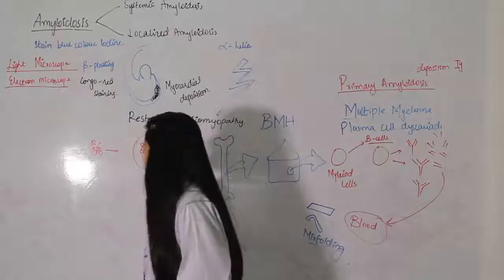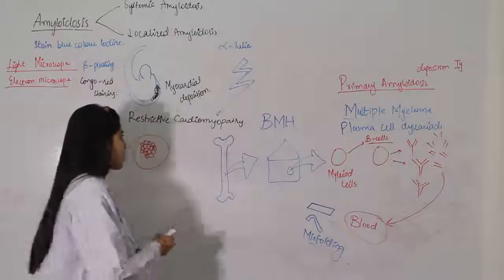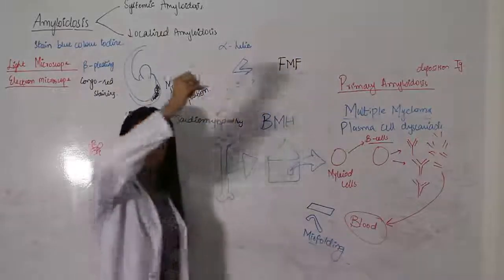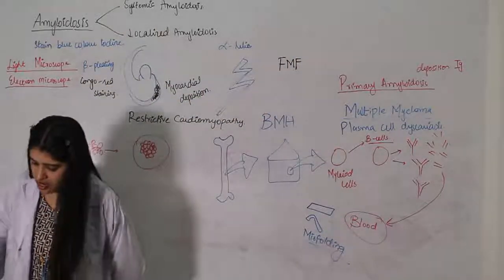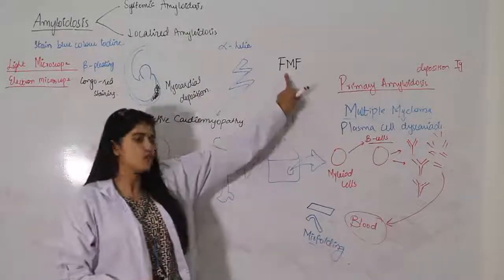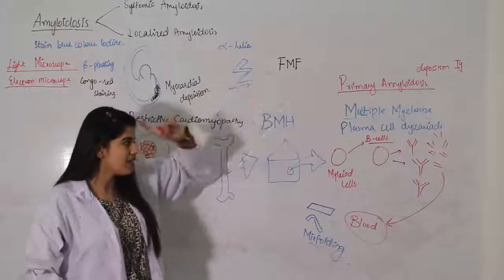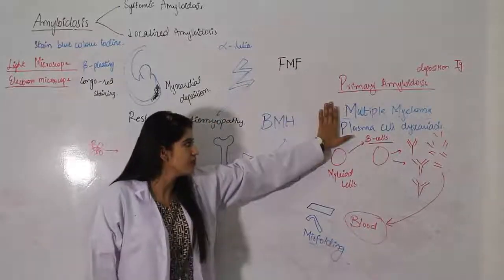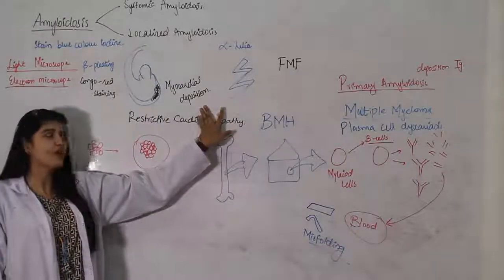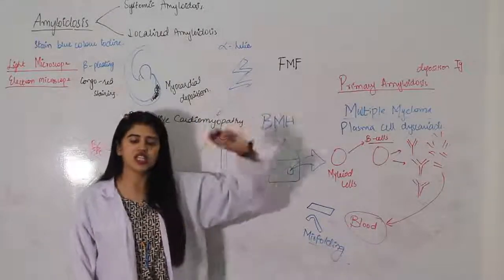This was all about systemic amyloidosis. We have one more condition: FMF - Familial Mediterranean Fever. We will discuss it afterwards as there is a long lecture on this disease. So let me remind you we have three conditions: multiple myeloma/plasma cell dyscrasias, restrictive cardiomyopathy by systemic amyloidosis, and FMF - Familial Mediterranean Fever.